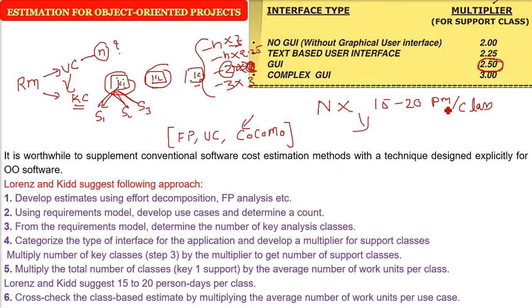You can cross-check the class-based estimate by multiplying the average number of work units per use case. This is a straightforward method to estimate object-oriented projects, based fundamentally on determining the number of classes.